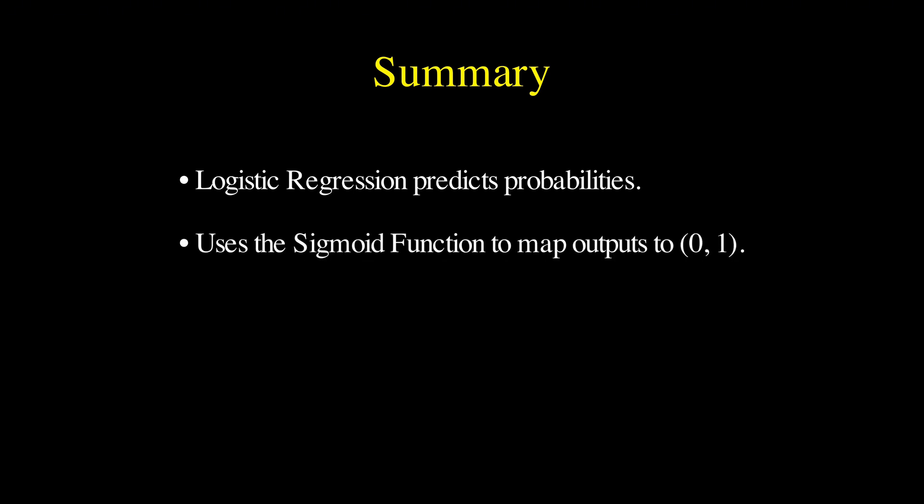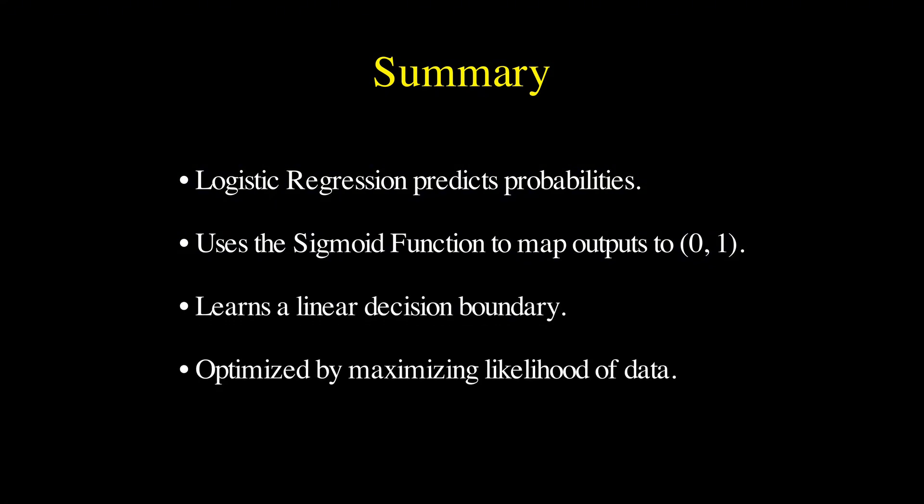To summarize, logistic regression is a powerful tool for classification. It uses the sigmoid function to output probabilities between 0 and 1, learns by maximizing likelihood, and separates data using a linear decision boundary. It's a simple concept, but it forms the foundation for many complex machine learning systems.